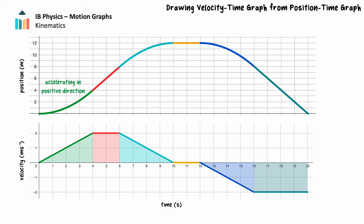In the first 4 seconds of motion, the object accelerates in a positive direction. From the position-time graph, we can see that the object's displacement in this segment is positive 4 meters. Examining the corresponding velocity-time graph, we can see the area bounded by the graph is above the time axis because the displacement is in a positive direction. The area of the triangle is 4 meters, the same as the displacement from the position-time graph.